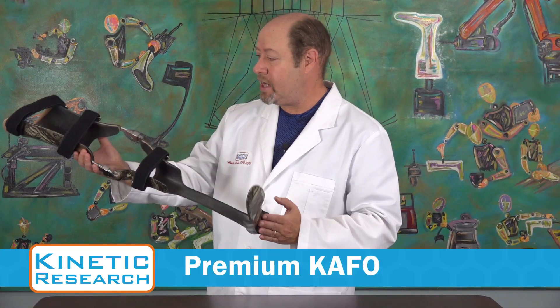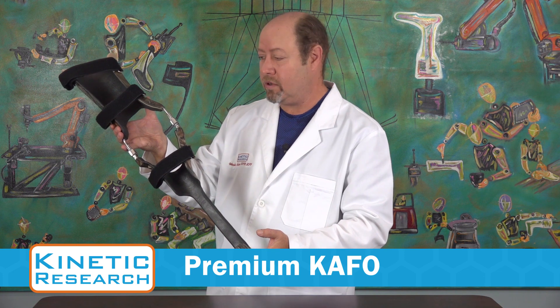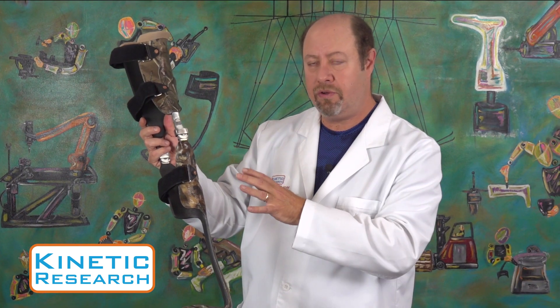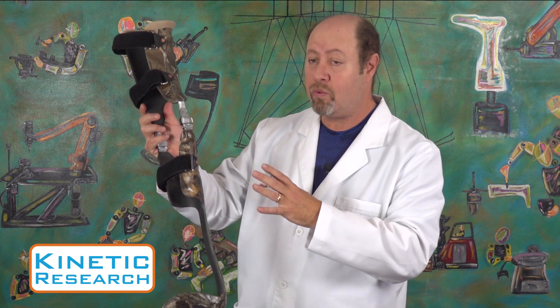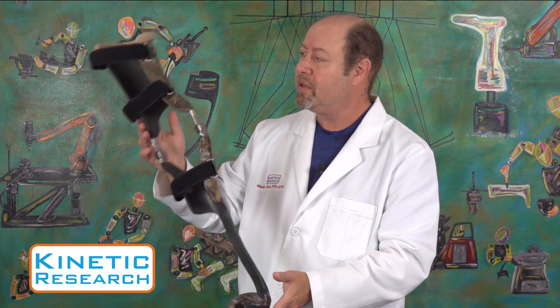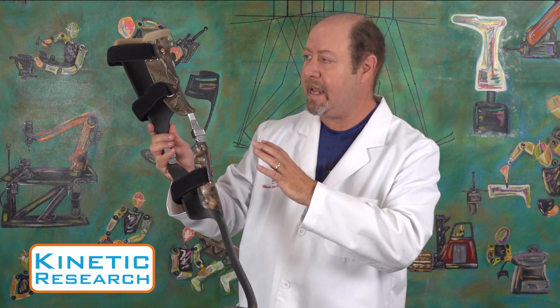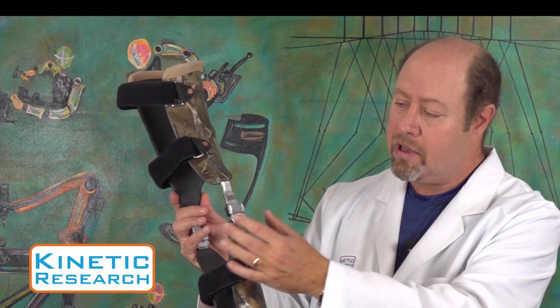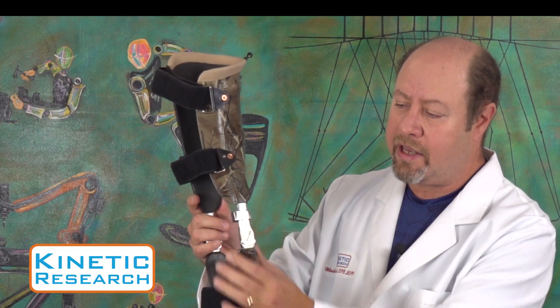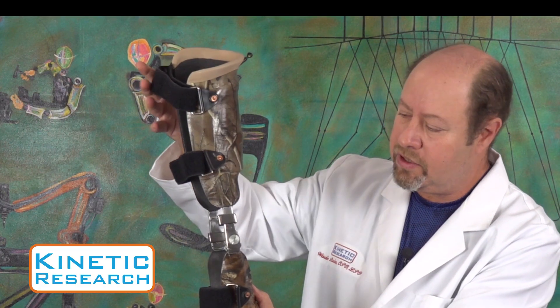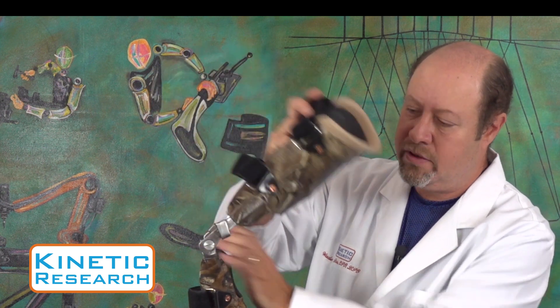This is an example of our premium CAFO. It's built much heavier duty. Even though it's lightweight relative to what it's doing, it's a significantly heavier layup because we have a locking mechanism that we've integrated into the knee component.